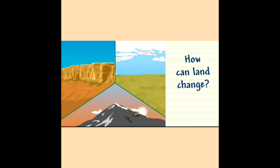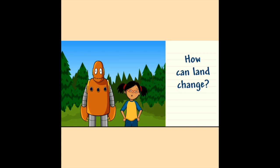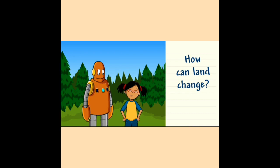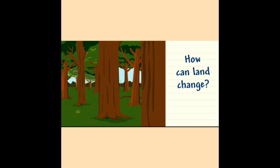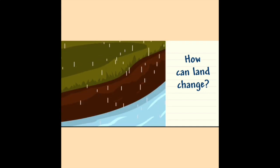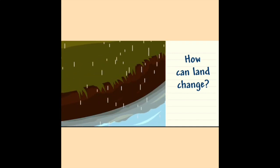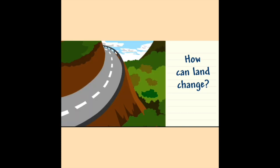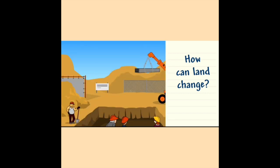Land forms look different because weathering and erosion have changed areas in different ways. People can change land, too. Plant roots help keep soil in place. When people clear land for farms or buildings, erosion happens a lot faster. The soil can wash away more easily. People also change land when they build roads or buildings.